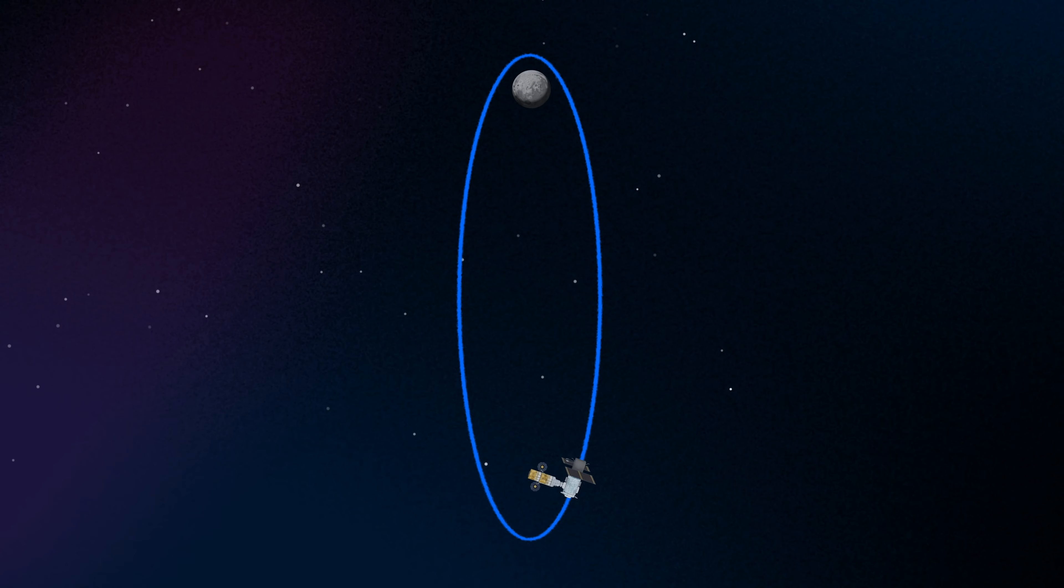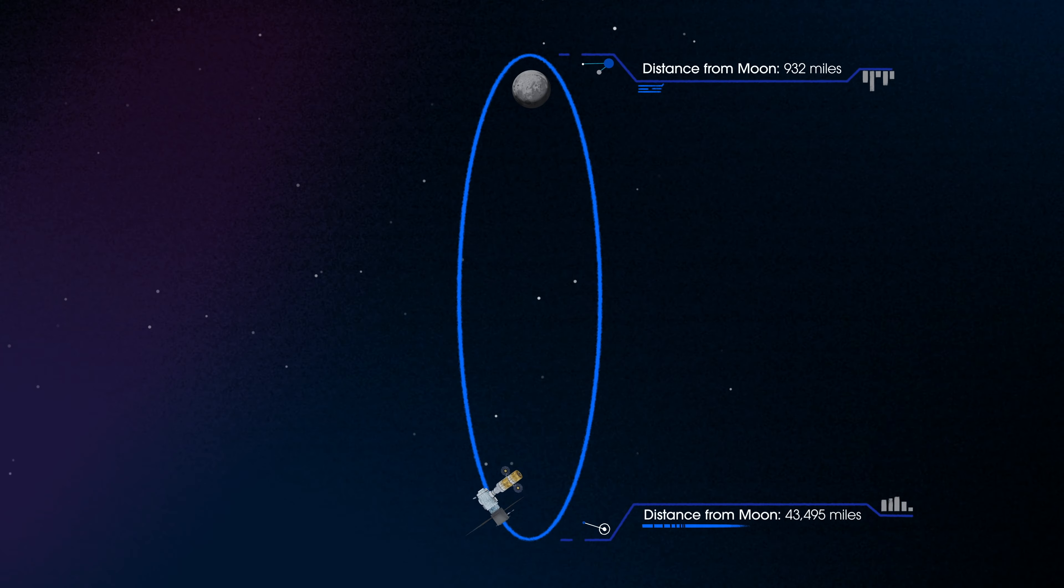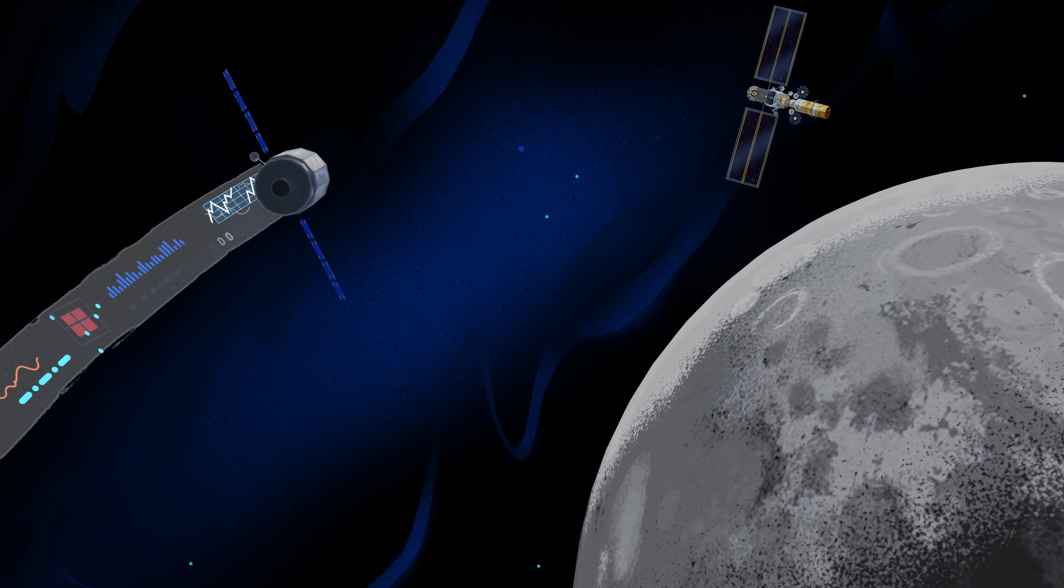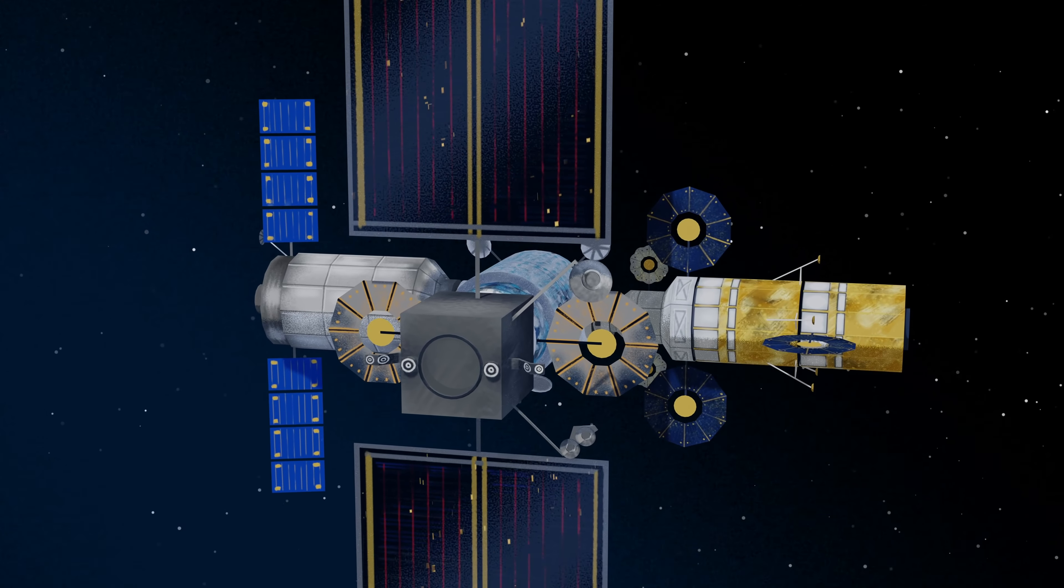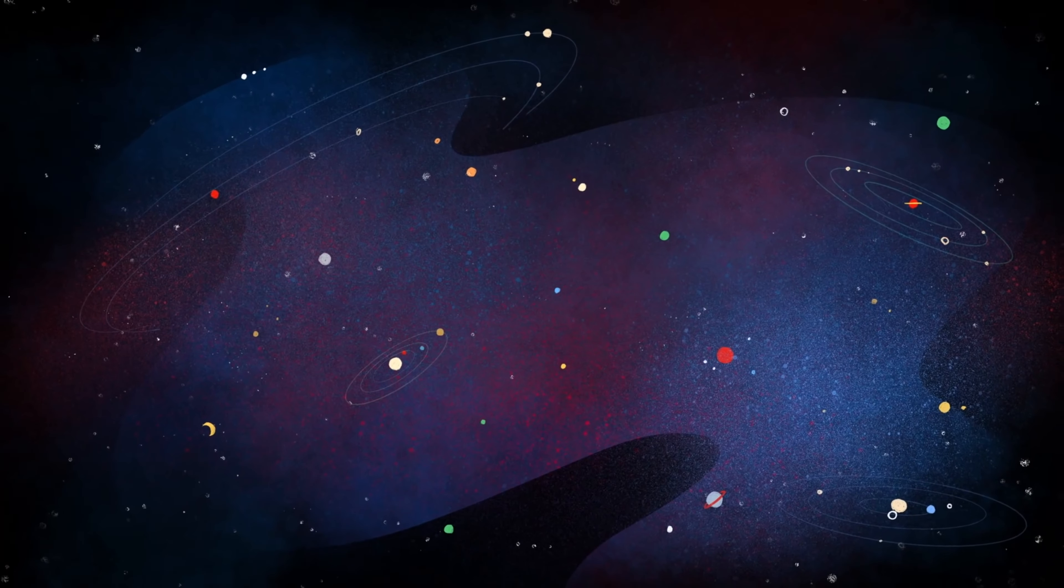But the real key in this approach is placing Gateway in a unique halo orbit to perfect the maneuvers needed for Mars missions. And with the growing list of commercial and international opportunities, Gateway is the ideal hub between Earth and all that lies beyond.